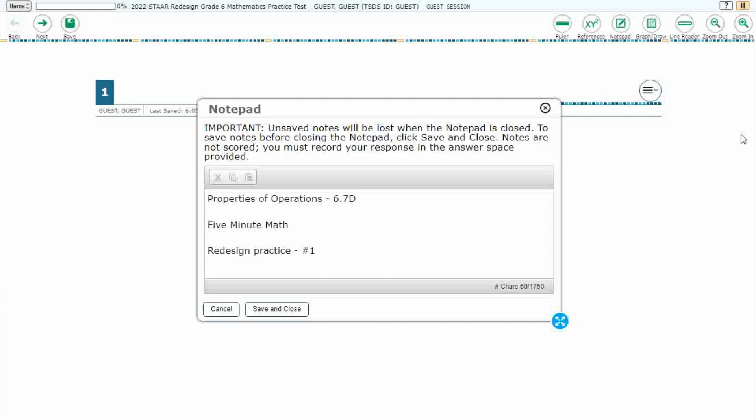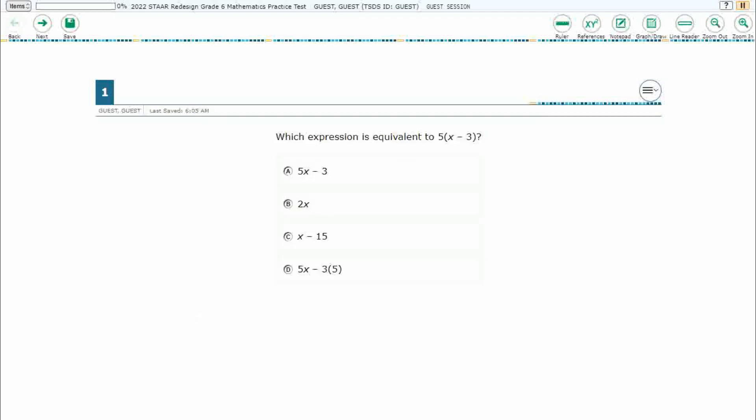Hello and welcome to 5-Minute Math. Today we are looking at the 6th grade concept of properties of operations. This is standard 6.7D in the great state of Texas and we are using item number 1 of the Redesign Practice Online Star Test. If you haven't done so already, please go ahead and take a moment to pause the video, work this problem out on your own, unpause it, and we will look at our answers together.